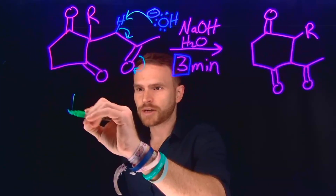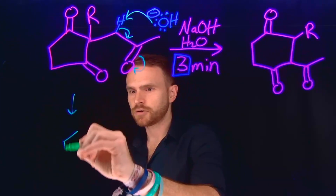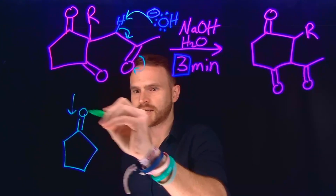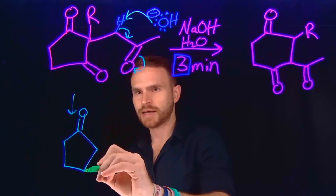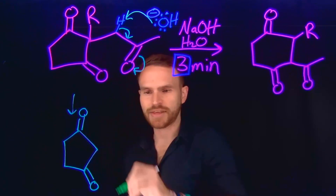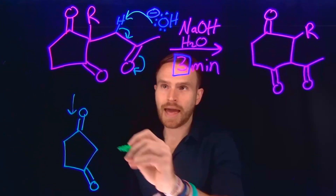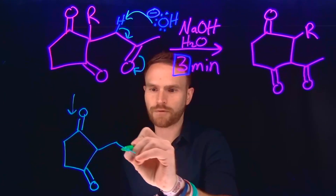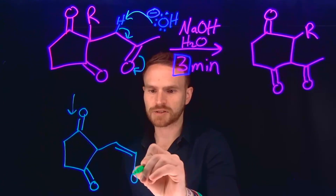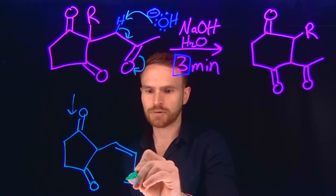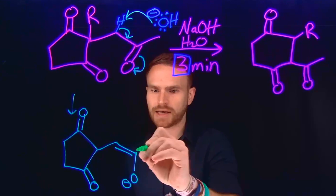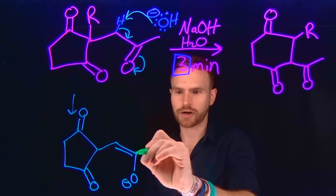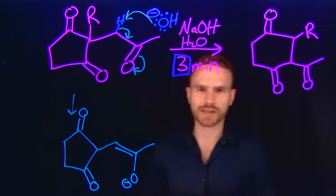The product of that transformation is still going to be that 5-membered ring, which has the ketone on it, as well as this ketone located at this position, except now we've formed an enolate at this position. So anytime you see an alkene attached to a carbon-oxygen with a negative charge on it, this is called an enolate.